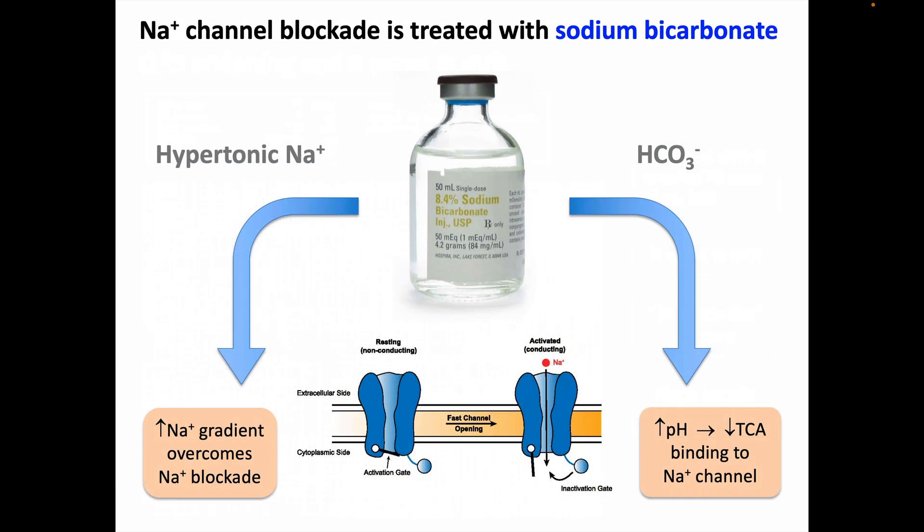This sodium channel blockade can be treated with hypertonic sodium bicarbonate via two independent mechanisms. The first relates to sodium: the hypertonic bicarb solution increases serum sodium concentration, increasing the chemical gradient of sodium across the membrane and favoring sodium influx during depolarization — effectively overcoming some of the blockade. Hypertonic sodium chloride could achieve this same effect, but sodium bicarbonate also provides a second mechanism: the binding of sodium channel blocking drugs is pH-dependent, binding better at lower pH. Giving bicarbonate raises the pH, decreasing drug binding to and blocking of sodium channels. Using sodium bicarb takes advantage of both mechanisms at once.